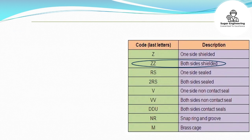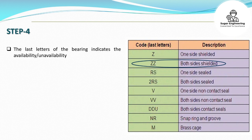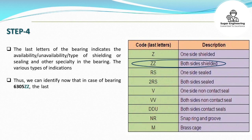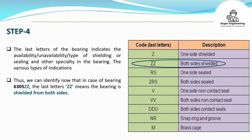Step 4: The last letters of the bearing indicate the availability, unavailability, or type of shielding or sealing and other specialties in the bearing. In the case of bearing 6306ZZ, the last letters ZZ mean the bearing is shielded from both sides.